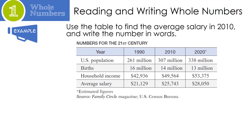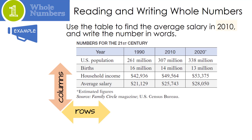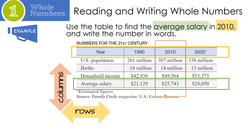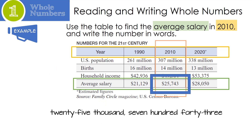We're going to use the table to find the average salary in 2010 and write the number in words. Columns go up and down and rows go side to side — that's really important to memorize. So we want the average salary in 2010, so we need to find the year 2010 — notice that I highlighted it. Next, we find the average salary row, and wherever they intersect is our answer: 25,743. But the question asks us to write the number in words: twenty-five thousand, seven hundred forty-three.